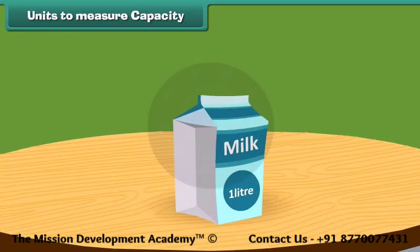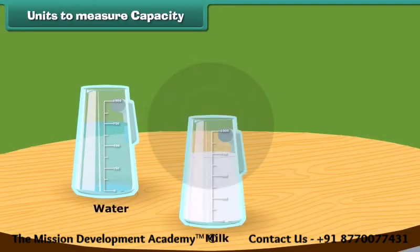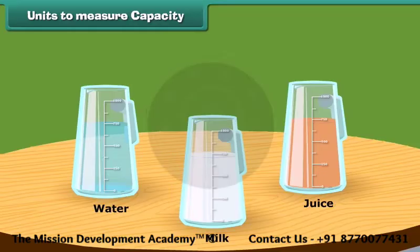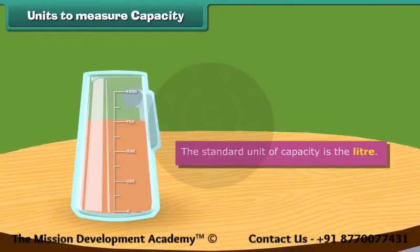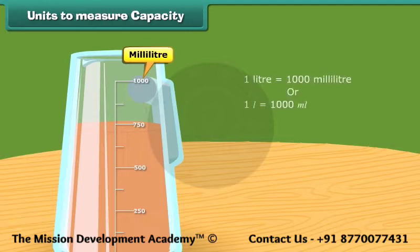How much milk comes to your home daily? 1 liter, 2 liters or more? The capacity of liquids like water, milk, juice, etc. is measured in terms of liters or milliliters. The standard unit of capacity is the liter. The part obtained by dividing 1 liter into 1000 equal parts is called a milliliter. This means that 1 liter is equal to 1000 milliliters.